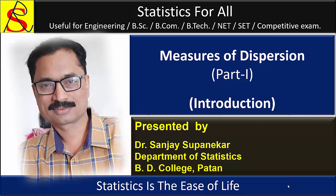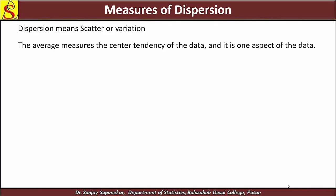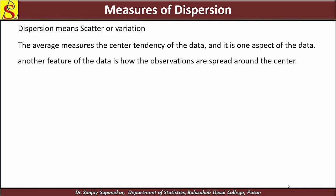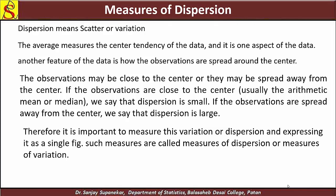In this lecture we will discuss measures of dispersion. Dispersion means scatter or variation. The average measures the central tendency of the data, and another feature of the data is how the observations are spread around the center. The observations may be close to the center or spread away from it. If observations are close to the center, we say dispersion is small; if spread away, dispersion is large.